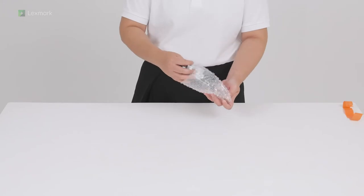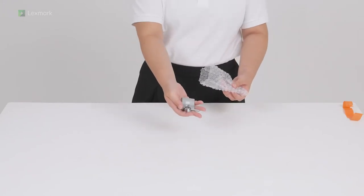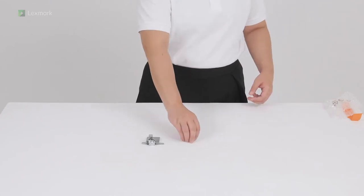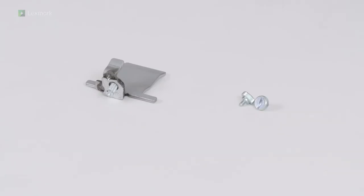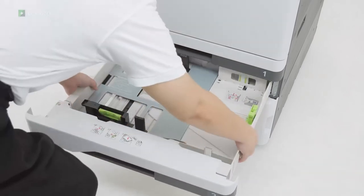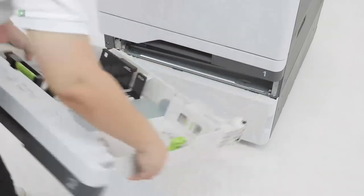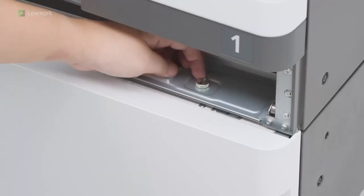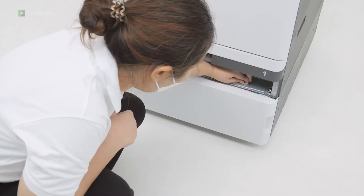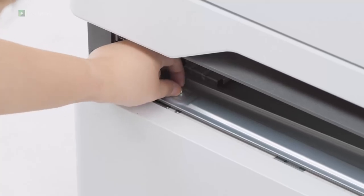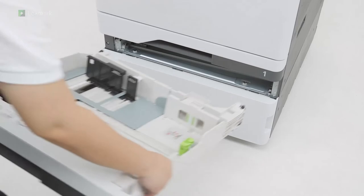Unpack the locking bracket and screws. Remove tray 2. Install the screws to secure the cabinet to the printer. Insert tray 2.